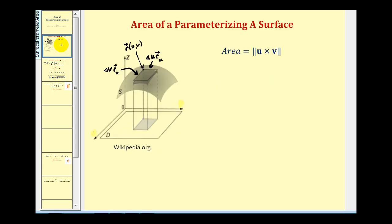If we want to determine the area of a surface, the idea starts by picking a point on the surface defined by r of uv, and determining two tangent vectors — one in the direction of the v-axis and one in the direction of the u-axis. This vector would be delta v times the partial derivative of r with respect to v, and this vector would be delta u times the partial derivative of r with respect to u.